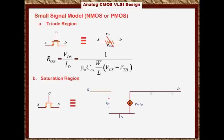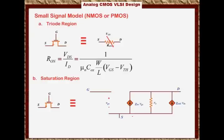Then there is a resistor R_O from the drain to the source, which relates to the channel modulation effect. And finally, there is one more dependent current source — the transconductance caused by the body-source effect — which is a function of V_BS, the voltage from the body to the source. Here is the body, and we are interested in the voltage from the body to the source, V_BS.